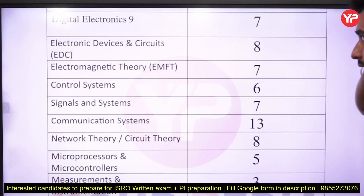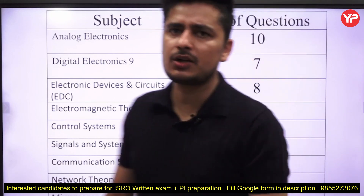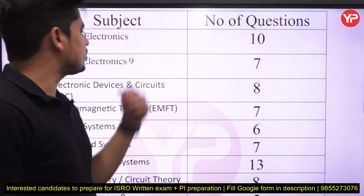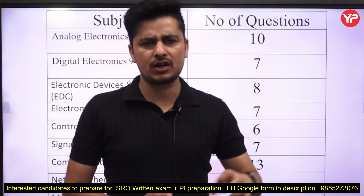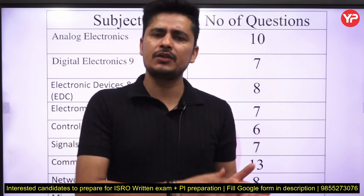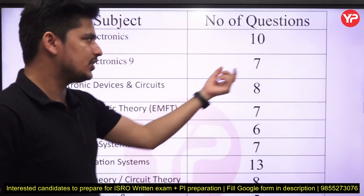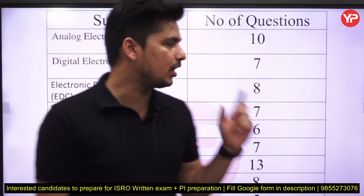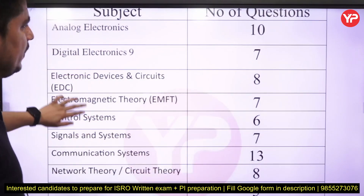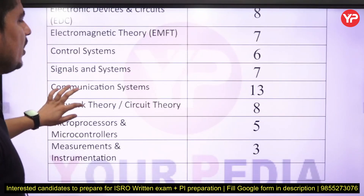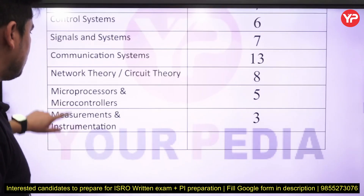Electromagnetic field theory is also important. Starting one by one: analog electronics has around 10 to 11 questions. Digital electronics has 7 questions. Electronics devices and circuits has 8 questions. Electromagnetic field theory has 7 questions. Control system has 6 questions. Signals and systems has 7 questions. Communication has 13 questions. Network theory has 8 questions. Microprocessor has 5 questions. Measurement and instrumentation has 3 to 4 questions.